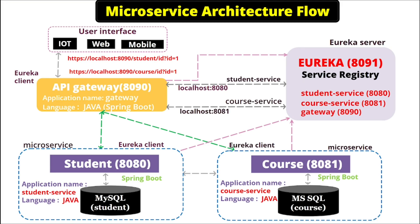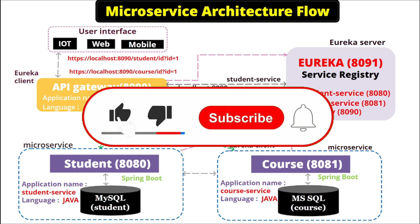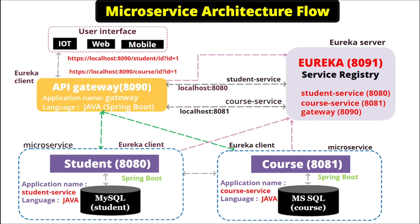This is the complete flow — we went through it and understood how it works internally. In the next video, we will see how we can achieve all these things through code. We will create a Eureka server, register all the microservices and API Gateway to that server, and then access everything through the API Gateway. If you find this video useful, please like, share, and subscribe the channel, and click the bell icon to get notifications for upcoming videos. Thanks.